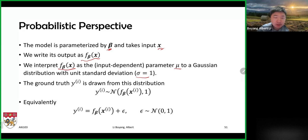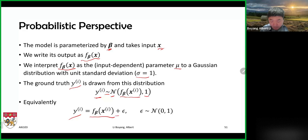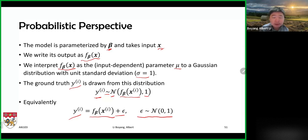We can think of the ground truth value as a sample drawn from that Gaussian distribution. So y_i is drawn from a normal distribution with mean f_beta(x) and variance one. This is equivalent to saying: y_i equals our model prediction plus a small error term, where the error is drawn from a Gaussian — representing measurement noise from the data collection process.